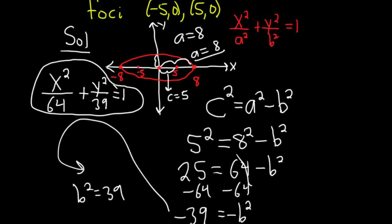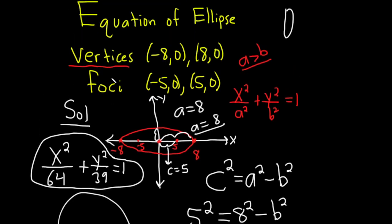This problem requires a lot of knowledge. You have to know what the vertices are—the vertices are the endpoints of the major axis. You have to know that this distance here is c, so c is 5, and then a is 8. So you have to know where everything goes on the ellipse, and you have to know the formula also.